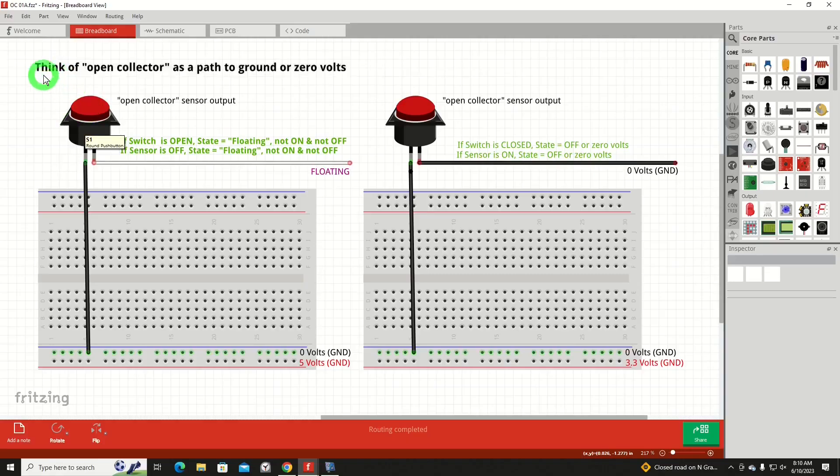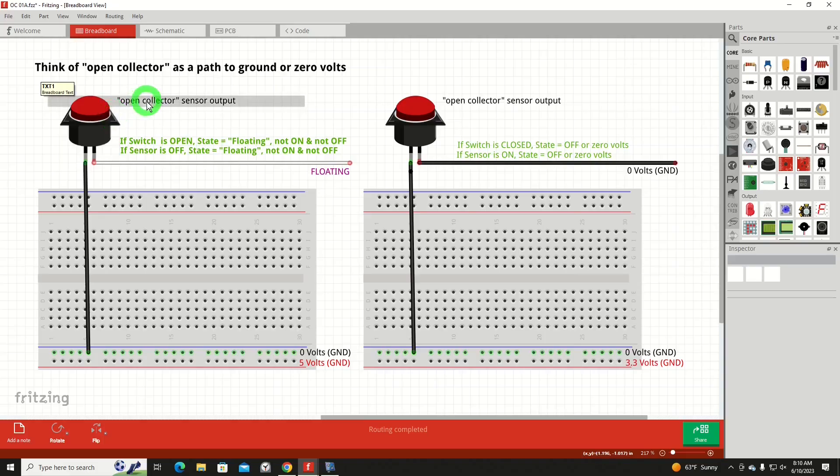We're going to use a fritzing diagram to help explain all of this. I'm going to use a stand-in for any number of sensors, because what I really want to convey here is the concept of what open collector is doing. The bold wording at the top says: think of open collector as a path to ground or zero volts. And that would be true when this sensor or the switch is active. Here's our switch, push button momentary, open collector sensor output - it's a stand-in for it.